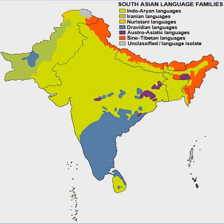The Dravidian family of languages includes approximately 73 languages that are mainly spoken in southern India and northeastern Sri Lanka, as well as certain areas in Pakistan, Nepal, Bangladesh, and eastern and central India, as well as in parts of southern Afghanistan, and overseas in countries such as the United Kingdom, United States, Canada, Malaysia, and Singapore.